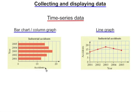The first graph is a bar chart or column graph showing the number of industrial accidents which occurred each year during this time period. The second graph is a line graph with the time periods along the horizontal axis.